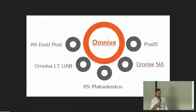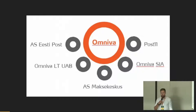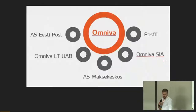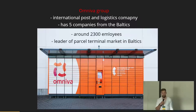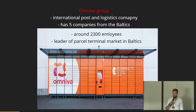A little bit about Omniva: Omniva is an international post and logistics company based in Tallinn, Estonia, with the entire Baltic states as its domestic market. The Omniva group has five companies from the Baltics, around 2,300 employees, and is the leader of the parcel terminal market in the Baltics.